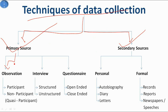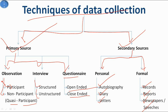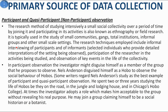In primary sources we basically have three types of techniques: observations, interview, and questionnaires. Observations are of two types — participant observation and non-participant observation, also known as quasi-participant. Interviews also have two types: structured and unstructured. Questionnaires have two types: open-ended and close-ended. In secondary sources we have personal sources — autobiography, diary, and letters — and formal sources including records, reports, newspapers, and speeches.